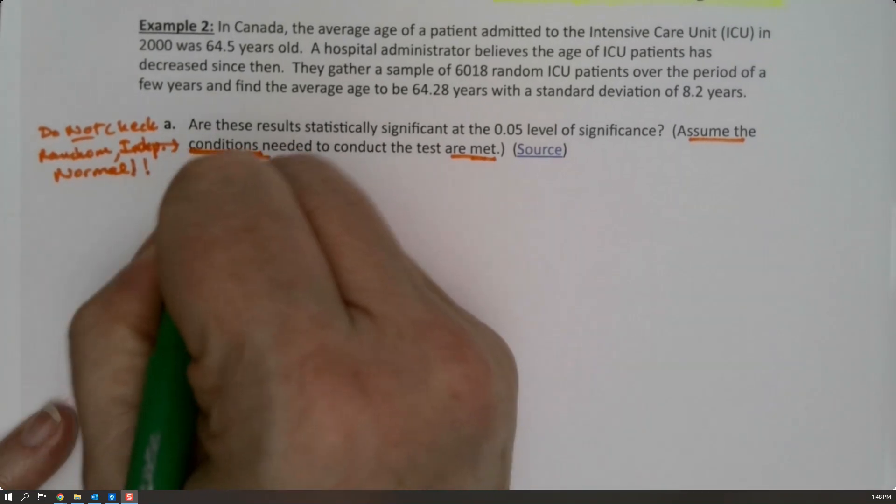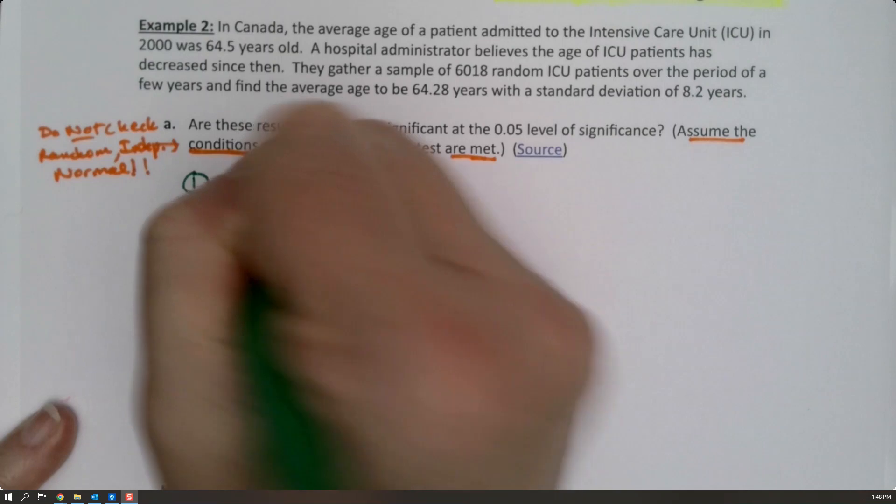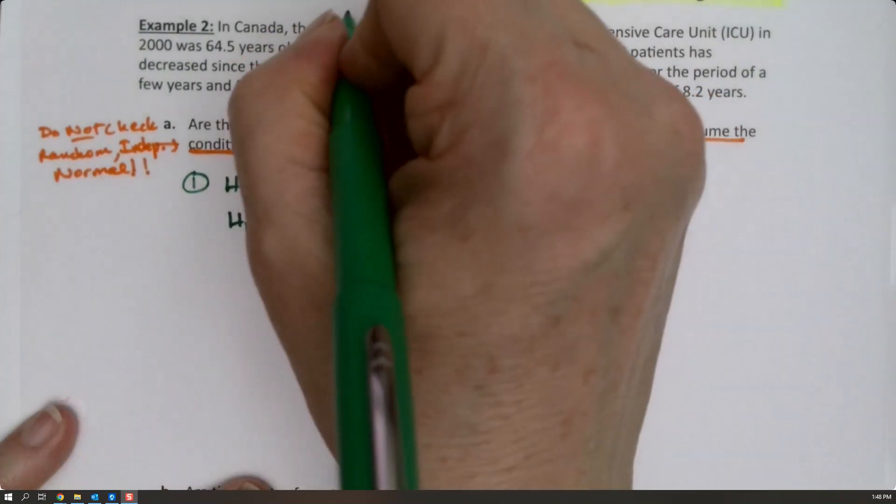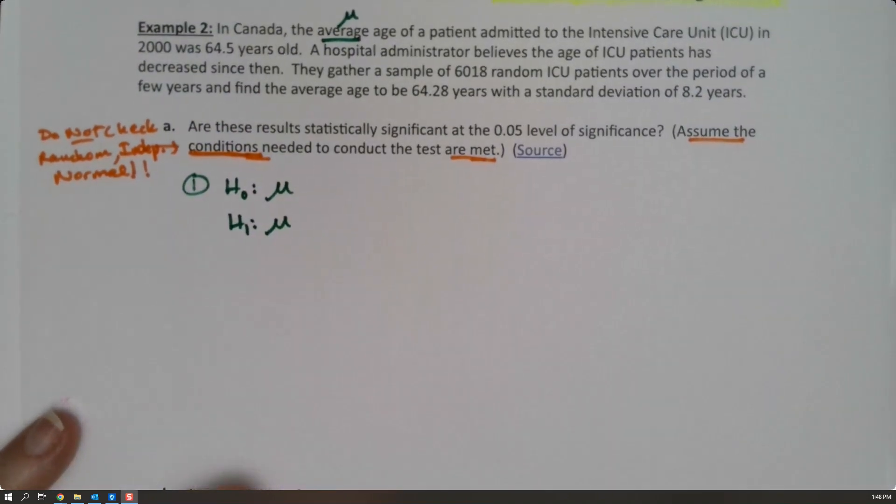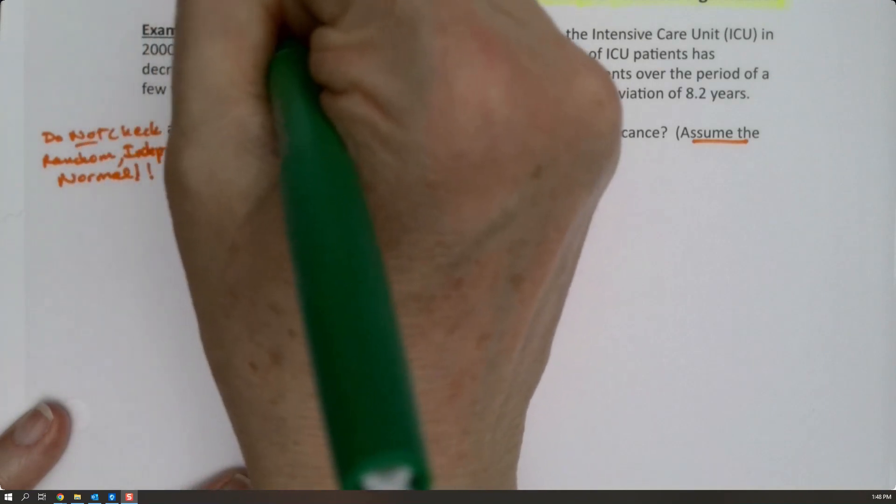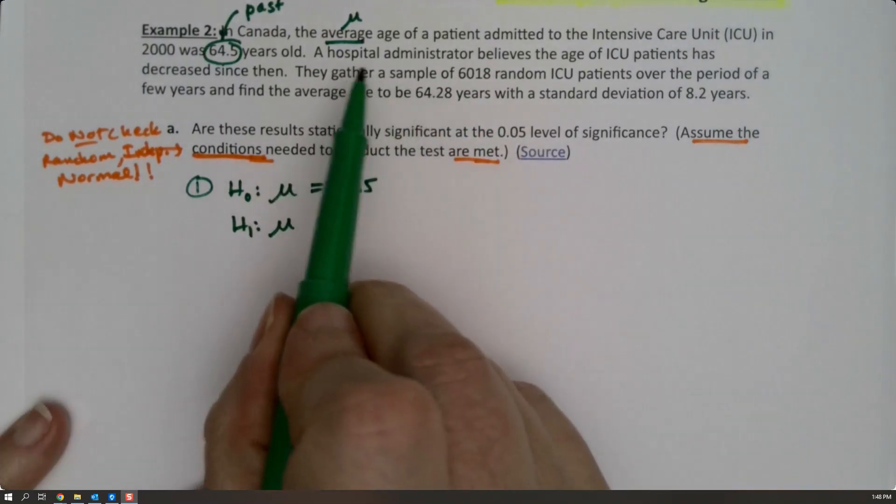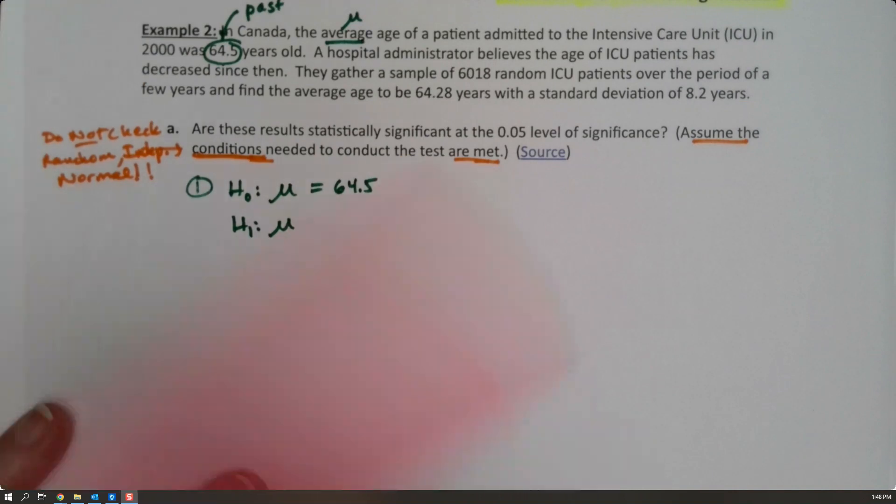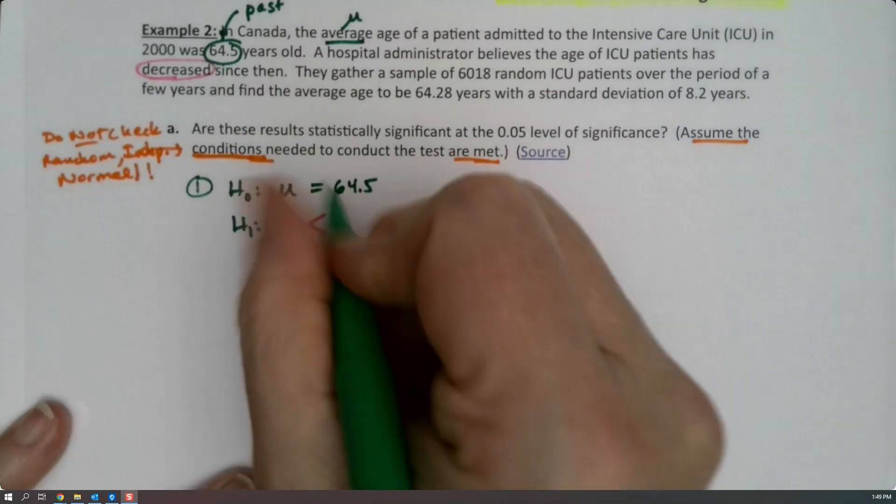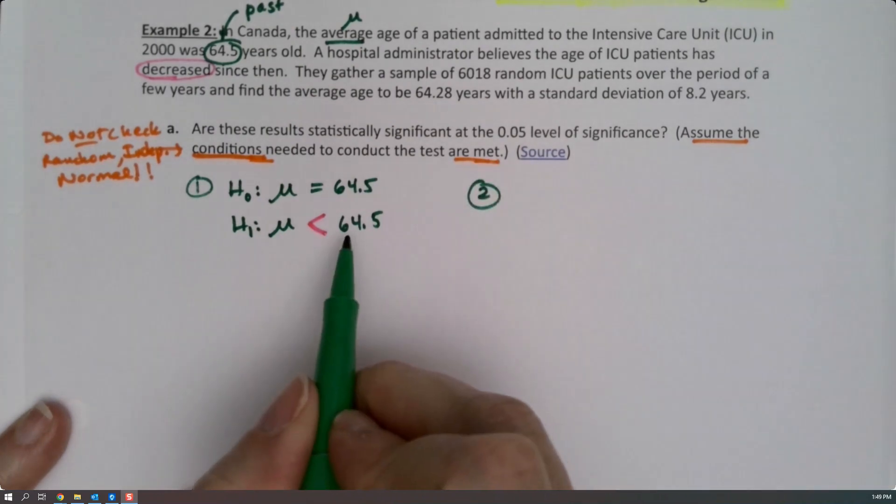Step one, let's figure out our null and alternative hypotheses. We know this is about average because it says average right in the problem, so that's mu. What is the average? Well, we assume it's 64.5 because that's from the past. And then the hospital administrators believe it has decreased since then, so that means that we think it's gone down and it's below 64.5.